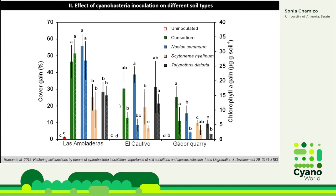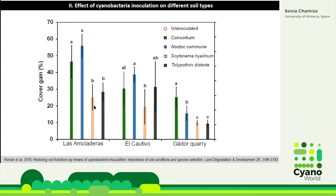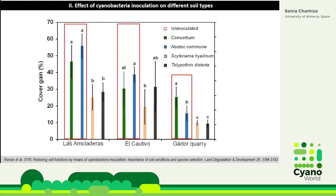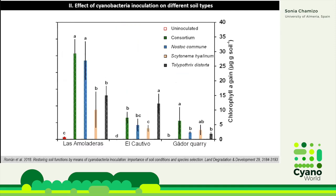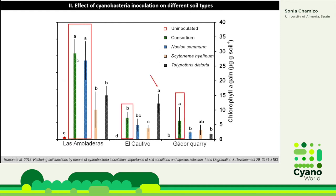Here I am showing some of the results that we obtained. We measured the cover of the samples, and the variables are expressed as the gain in comparison with the initial soil used for the experiment. The cover gain was higher in the soils inoculated with a mixture and also with Nostoc commune, and this was observed in the three types of soils. When we looked at the chlorophyll A gain, we also observed that in general the soils inoculated with the consortium and with Nostoc commune showed higher chlorophyll A gain. At El Cautivo we found very high chlorophyll content in the soils inoculated with Tolypothrix distorta, but this was just at one site.